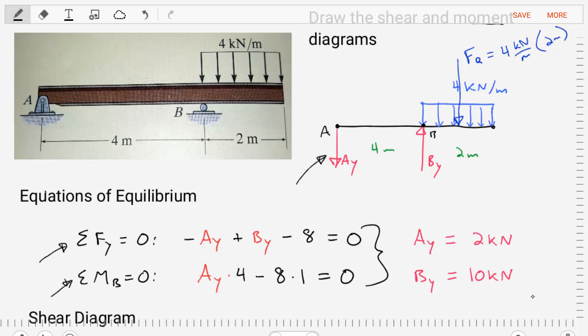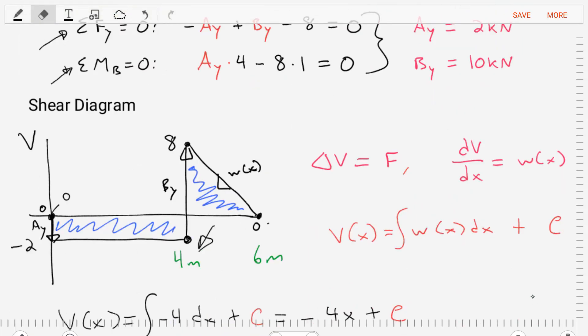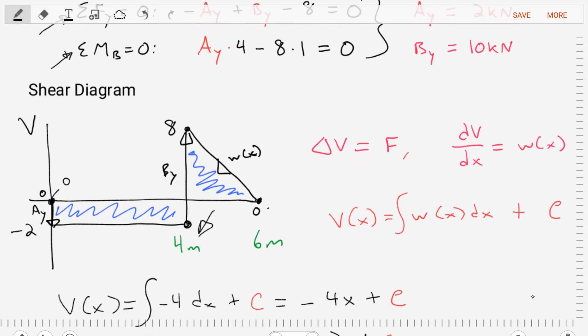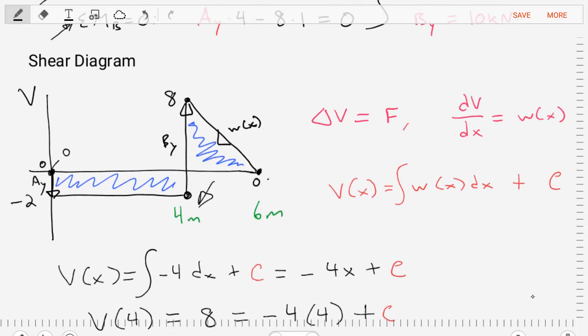What do we encounter? Well, we encounter our uniform distributed load of 4 kN per meter. With that distributed load, there's two ways that we can deal with it. One thing is the distributed load is equal to the slope of our diagram.